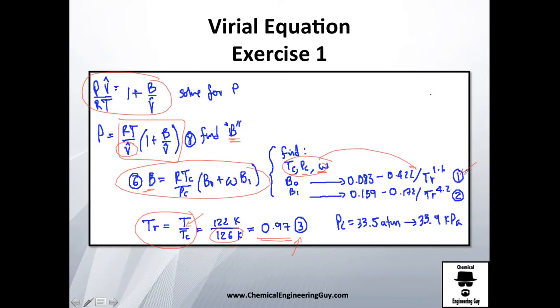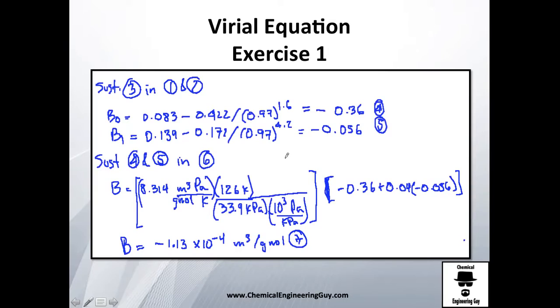Let's call that equation number 3. Equation number 3 will be substituting equation 1 and 2, which is B0 and B1. Let's continue. I just apply them here. Look how the reduced temperature is going to be power to the 1.6 and 4.2.